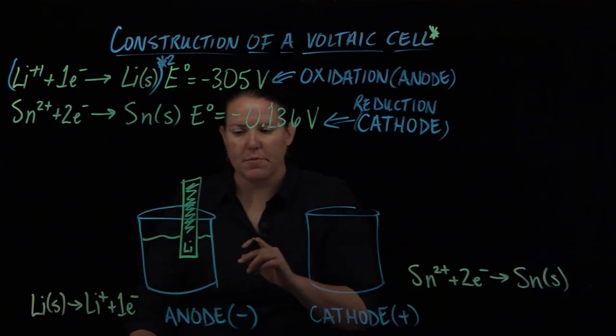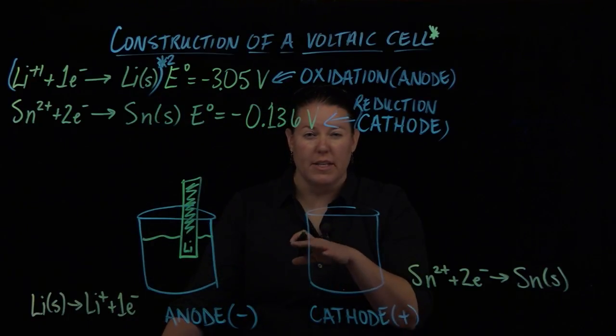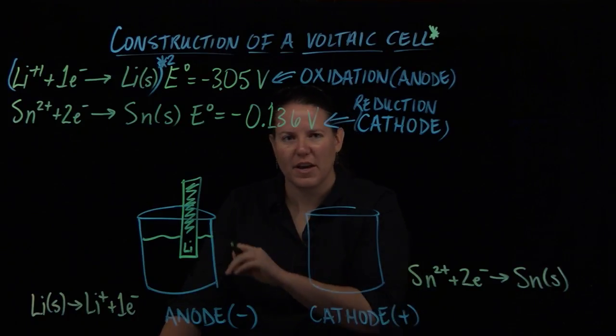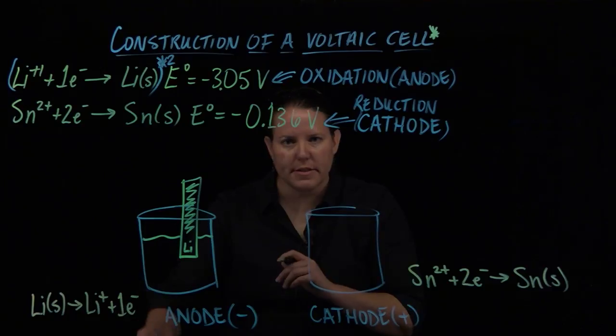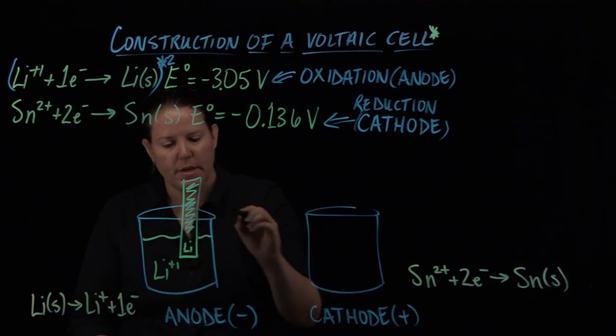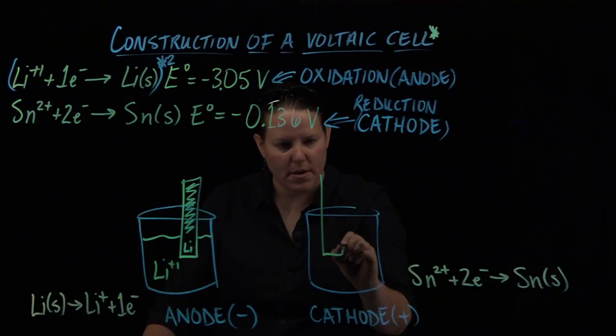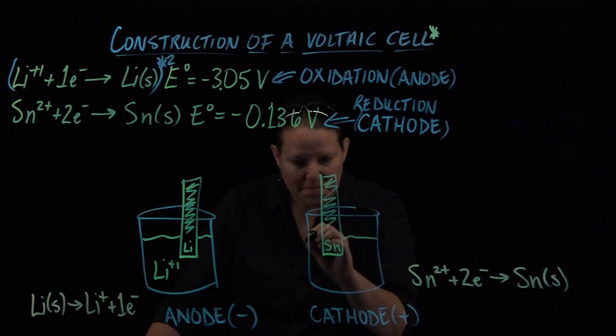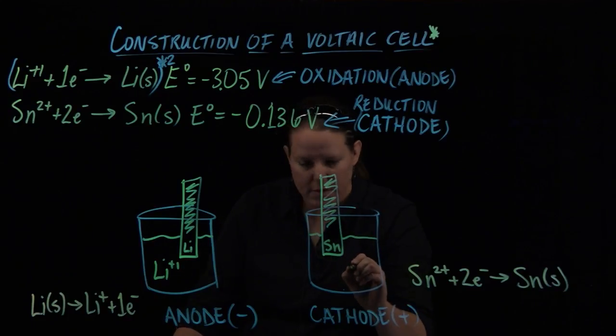This is going to be solid lithium. If you have a solid metal, it's always going to be an electrode made out of that metal. The only time that you don't have an electrode made out of that metal is when you have something particularly expensive and you can't afford it, or if you have two ions in your half reaction.